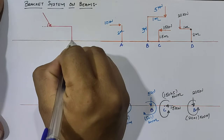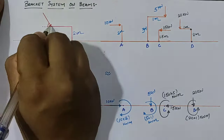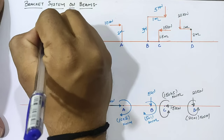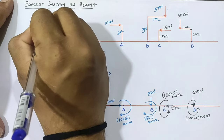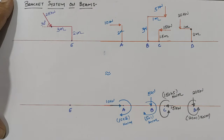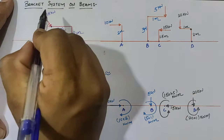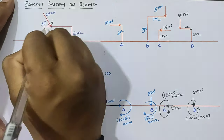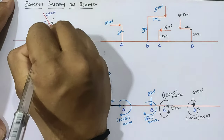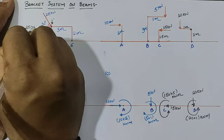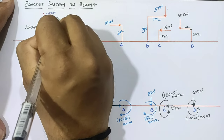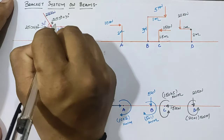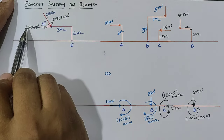At point E, the column height is 2 meters, the beam width is 3 meters, and an inclined load of 25 kN at 30 degrees to the horizontal acts at the beam end. When an inclined load is given, we resolve it into two mutually perpendicular components. Since the angle is with the horizontal, the horizontal component is 25 cos 30° and the vertical component is 25 sin 30°. We then ignore the actual inclined load and work with these resolved components.